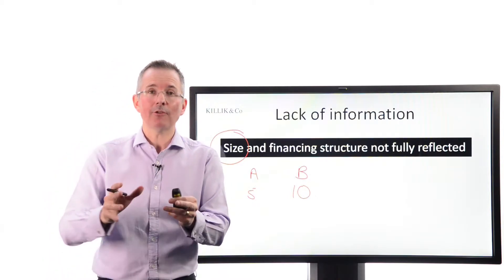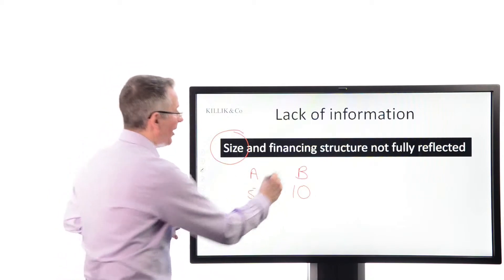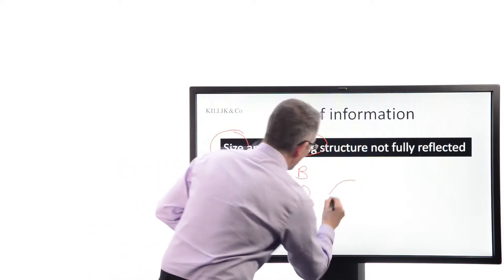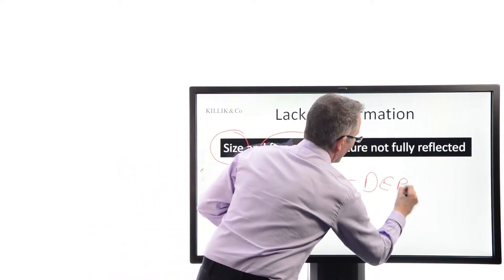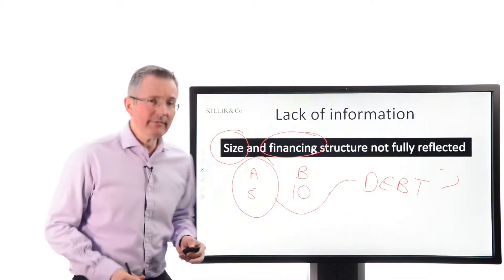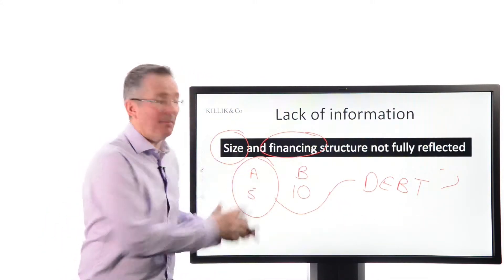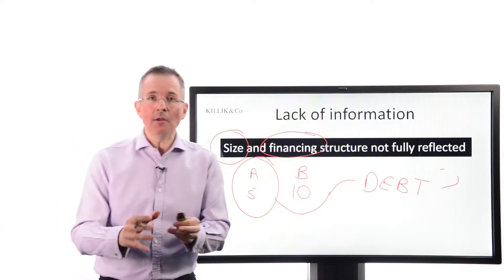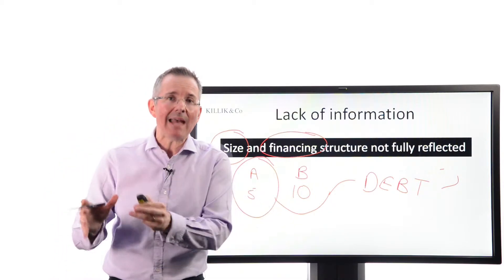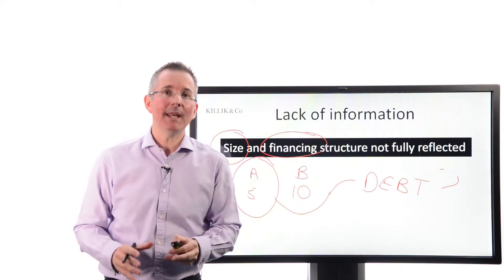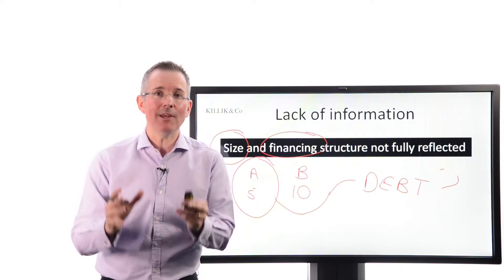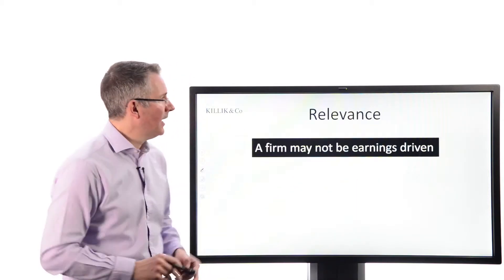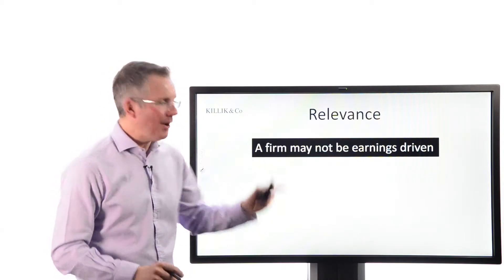Being a single number, PE ratios give you a limited amount of data to make a comparison on. Even if the firms are of similar size, when you look at low PEs you've got to think: is that low PE a function of risk? Could it be that there's more debt financing in one firm than the other? Debt does change the risk profile of a company, and you simply can't tell just by looking at a PE ratio.